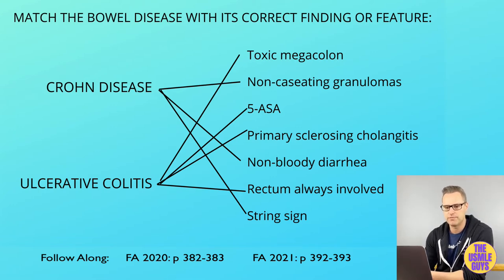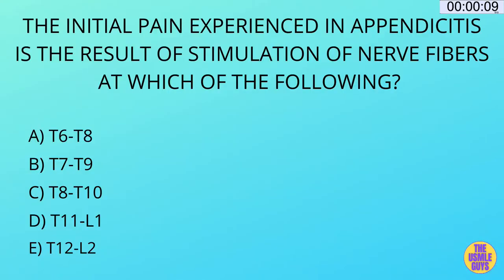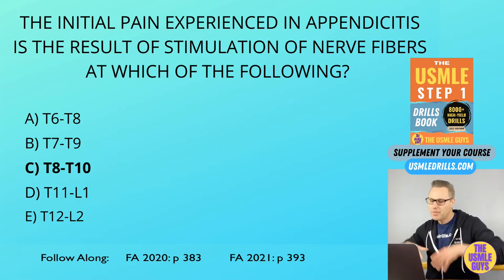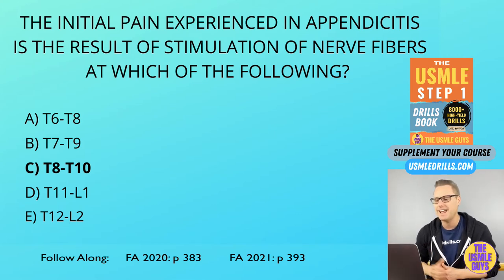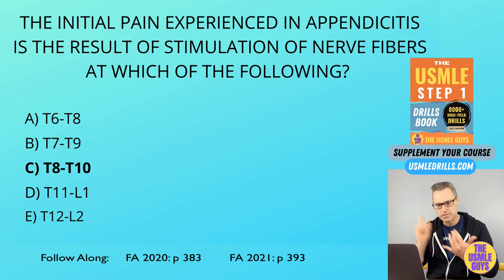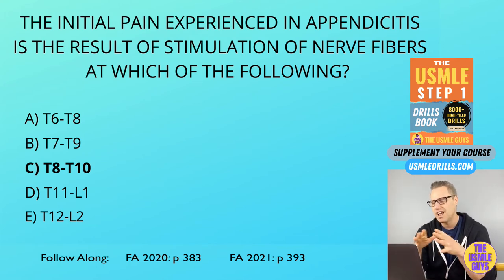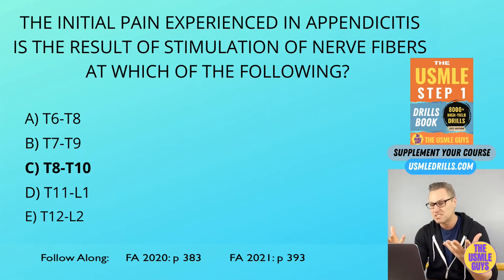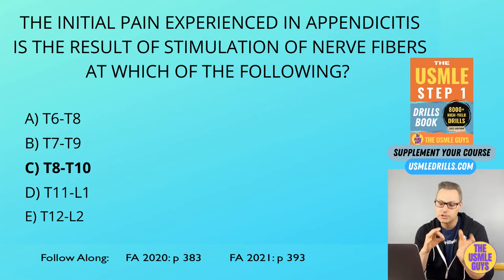The correct answer is C. Appendicitis is characterized initially by diffuse periumbilical pain that localizes to McBurney's point — one-third the distance from the right ASIS to the umbilicus. Patients present with severe abdominal pain, nausea, vomiting, and fever. Clinical tests include the psoas sign, obturator sign, Rovsing sign, and rebound tenderness. In adults, the most common cause is obstruction by a fecalith; in children, it's lymphoid hyperplasia. Management is appendectomy.